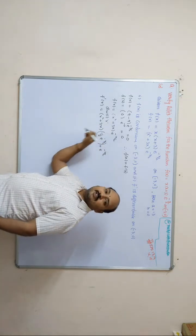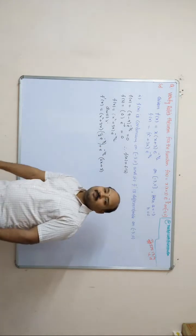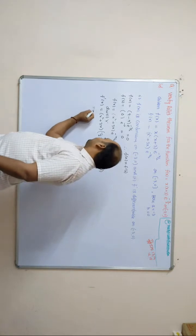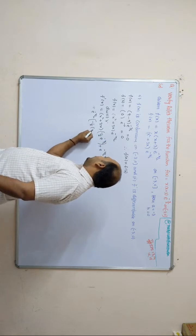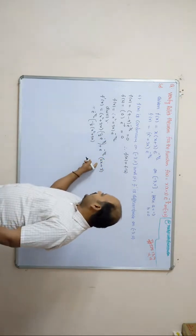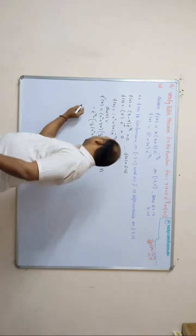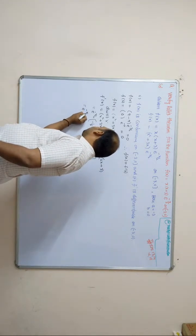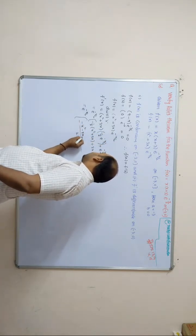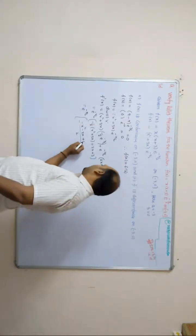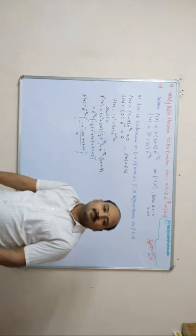Taking e^(−x/2) as common factor: f'(x) = e^(−x/2)[−(1/2)(x² + 3x) + (2x + 3)]. Using 2 as the LCD to simplify: f'(x) = e^(−x/2) · (−x² − 3x + 4x + 6) / 2, which gives f'(x) = e^(−x/2)(−x² + x + 6) / 2.